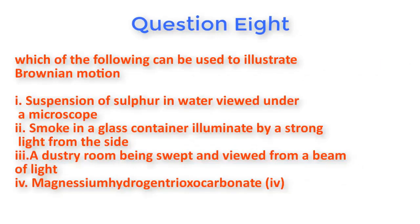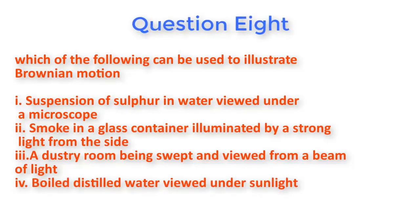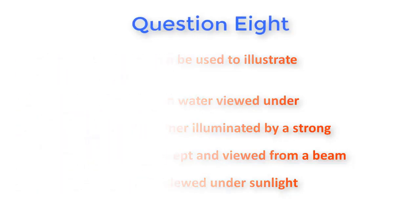Question number eight: Which of the following can be used to illustrate Brownian motion? One: A suspension of sulfur in water viewed under a microscope. Two: Smoke in a glass container illuminated by a strong light from the side. Three: A dusty room being swept and viewed through a beam of light. Four: Boiled distilled water viewed under sunlight.